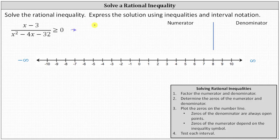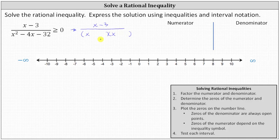So we have the quantity x minus three divided by — let's go ahead and factor the quadratic expression. If it does factor, it'll factor into two binomial factors. Because the first term is x squared, we have an x in the first position of each binomial factor. The second terms will be factors of negative 32 that add to negative four, which are negative eight and positive four, giving us a factor of x minus eight and a factor of x plus four. And we still have greater than or equal to zero.